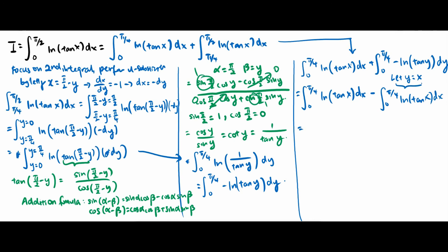And this is just nicely 0. So basically the integral from 0 to pi over 2 of ln(tan x) dx is equivalent to 0, and that's the answer to this question. Thank you guys for watching. I will see you in the next video. If you like this video, like or subscribe to the channel.